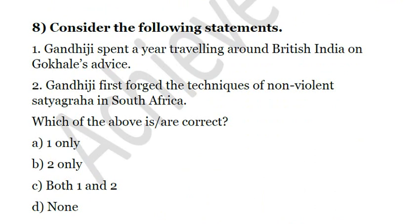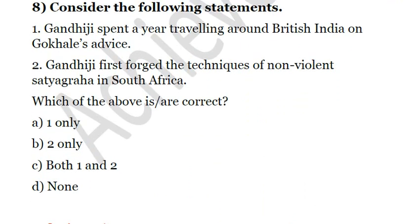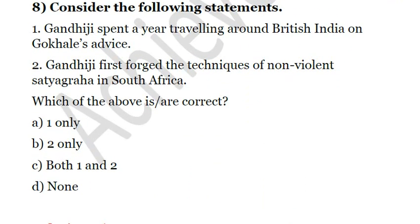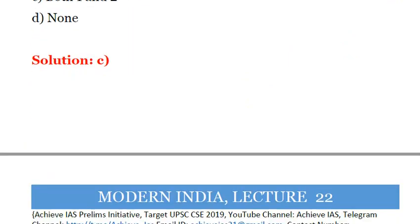Question 8: Consider the following statements. First, Gandhiji spent a year traveling around British India on Gokhale's advice. Second, Gandhiji first used the techniques of non-violent Satyagraha in South Africa. Both statements are correct — Gandhi did travel around British India, and he developed the techniques of non-violent Satyagraha in South Africa. The answer is C: both 1 and 2.